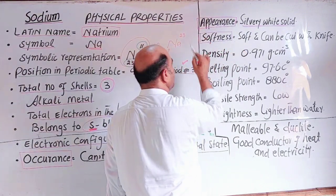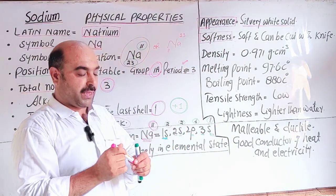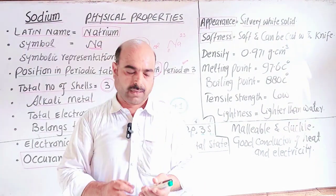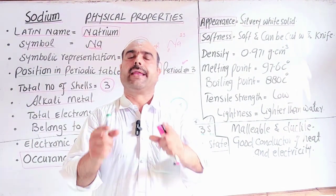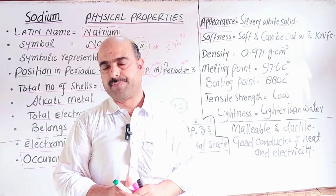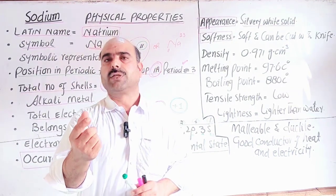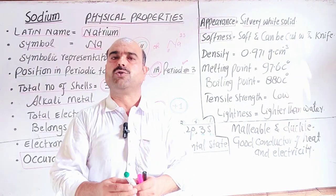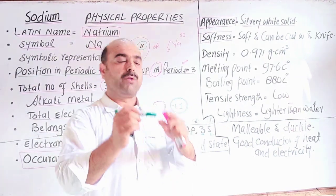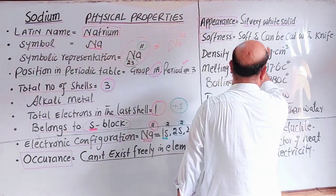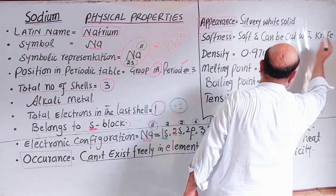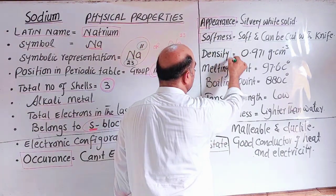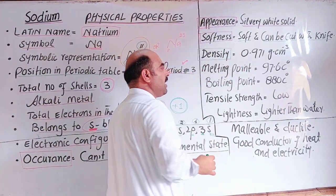Softness: It is a soft metal. Metals can be hard or soft, but sodium is a soft metal and it can be cut with a knife like hot butter. It is soft and can be cut with a knife easily.